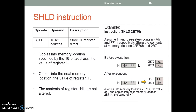SHLD: store HL register direct. Copies into the memory location specified by the 16-bit address the value of register L, and copies into the next memory location the value of H. The contents of register HL are not altered. Example: instruction SHLD 2B70. Assume HL register contains 4A and FF respectively. Before execution, the memory locations contain arbitrary values. After execution, the value of L is copied to memory location 2B70 and the value of H is copied to memory location 2B71.